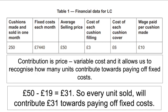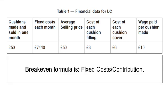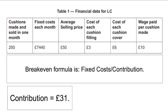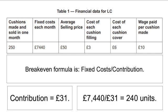Their fixed costs are £7,440. So we need to work out how many units at £31 contribution would cover that £7,440. We get our fixed costs and divide by the contribution: £7,440 divided by £31 gives a breakeven of 240 units. As soon as we've produced and sold 240 units, profit will be zero. Selling 241 units means we start generating a profit. If we only sell 239 units, we haven't broken even yet and we're making a loss.